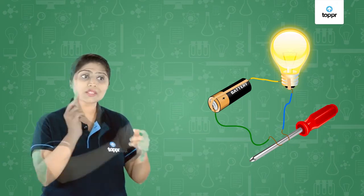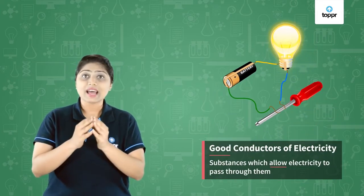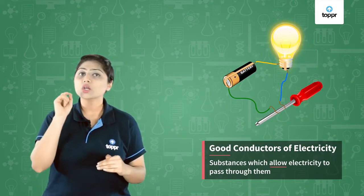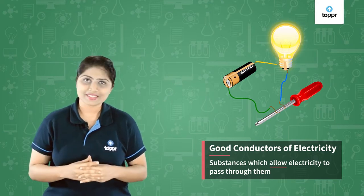Do you see the bulb glowing? Yes — that means the metallic part is conducting electricity, due to which electricity is passing through the circuit. The substances that allow electricity to pass through them are called good conductors of electricity.